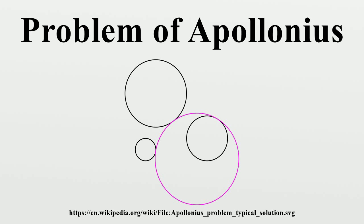Apollonius' problem can also be formulated as the problem of locating one or more points such that the differences of its distances to three given points equal three known values. Consider a solution circle of radius rs and three given circles of radii r1, r2, and r3. If the solution circle is externally tangent to all three given circles, the distances between the center of the solution circle and the centers of the given circles equal d1 = r1 + rs, d2 = r2 + rs, and d3 = r3 + rs, respectively. Therefore, differences in these distances are constants, such as d1 − d2 = r1 − r2. They depend only on the known radii of the given circles and not on the radius rs of the solution circle, which cancels out.